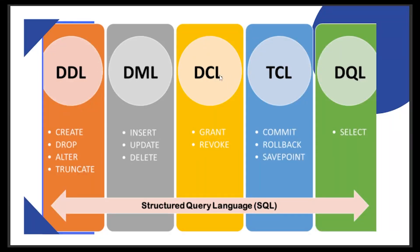Then you have DCL, which is the Data Control Language. It has two commands: grant and revoke, which are used to give certain permissions related to the data. Then you have TCL, which is the Transaction Control Language. These are related to transactions and have three commands: commit, rollback, and save point. Finally, you have DQL, the Data Query Language, which has the select command. Data querying is used for extracting data from the table as we want it, and you can apply certain conditions on it as well. We are going to see all of these five languages in detail in this complete playlist.